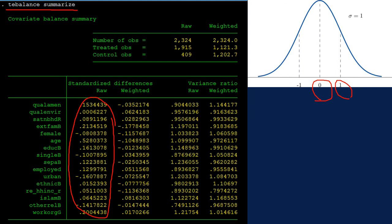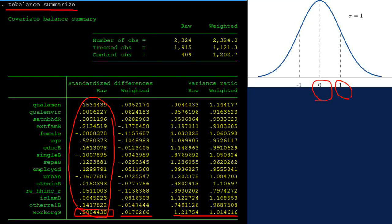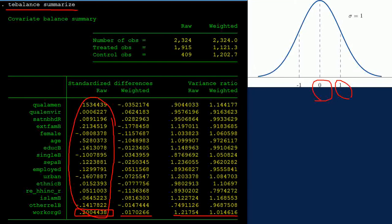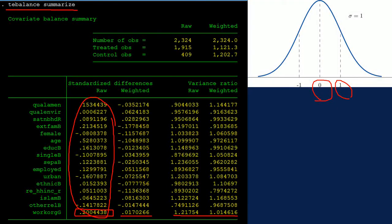For example, this variable has a mean difference of 0.2 before the adjustment, but it becomes 0.01. And its variance of difference became closer to 1.